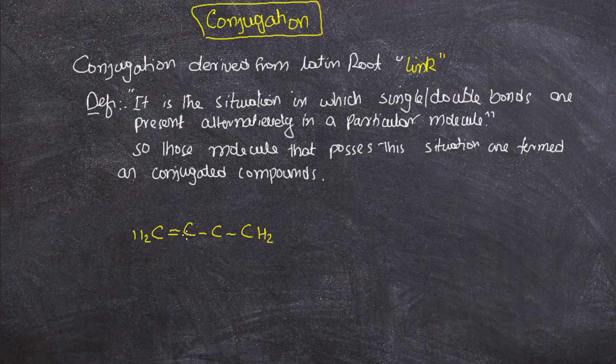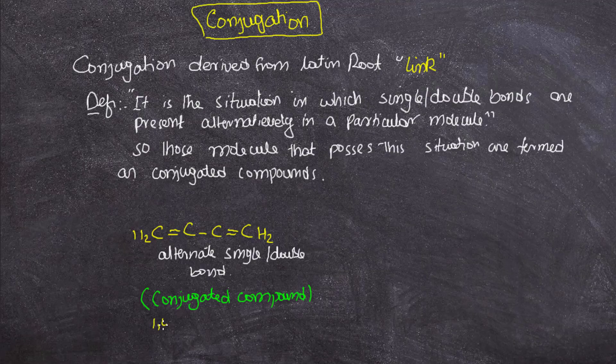Let's discuss one example: carbon double bond, carbon single bond and double bond. So you can see there are alternate single and double bonds. Whenever this situation arises where single or double or triple bonds are separated by a single bond, it is termed as a conjugated compound.